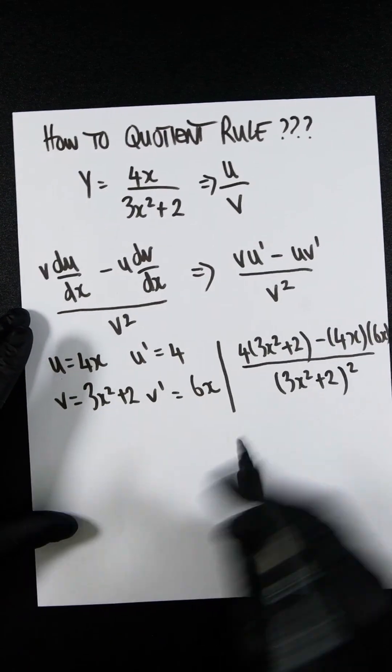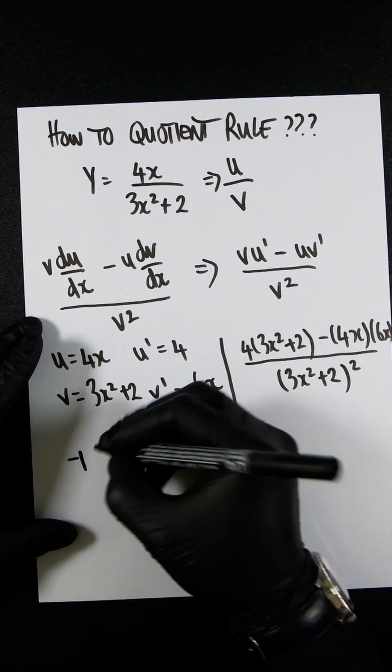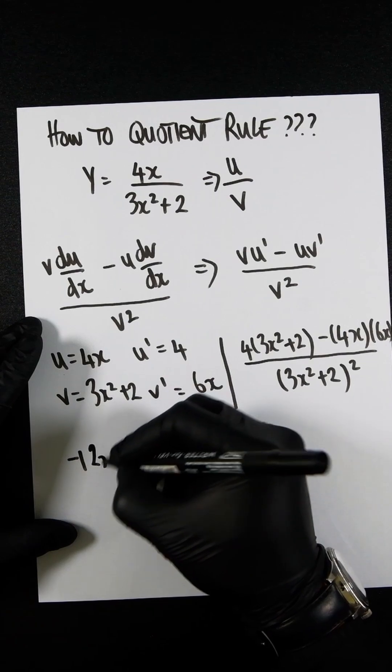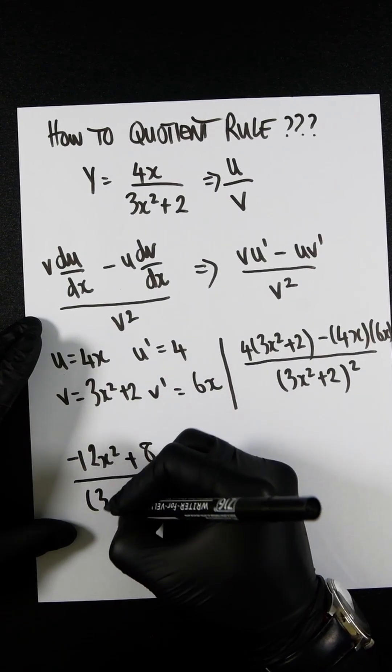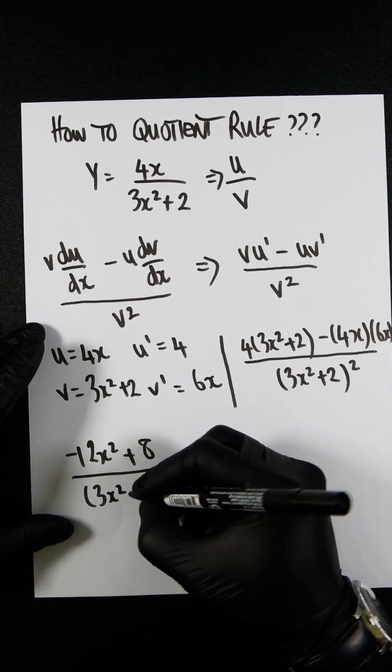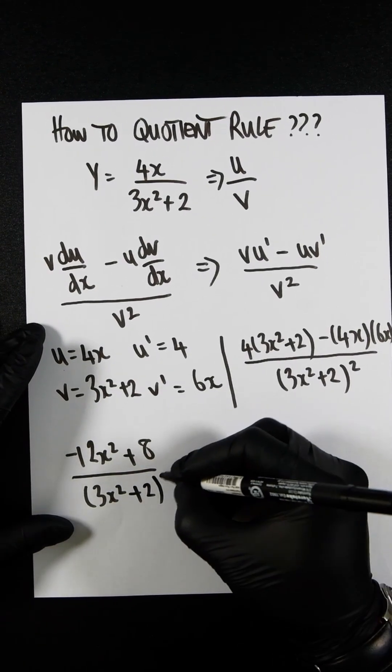If we clean up the numerator, we should get minus 12x squared plus 8, all divided by 3x squared plus 2, all squared.